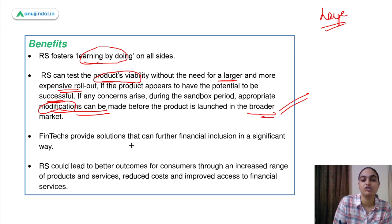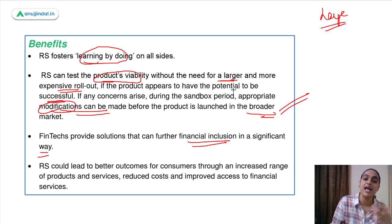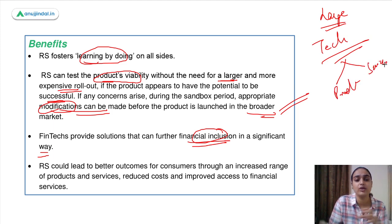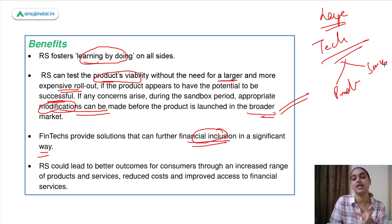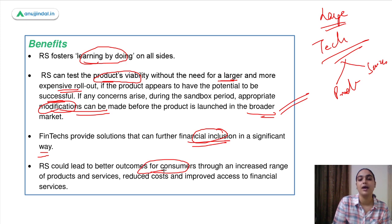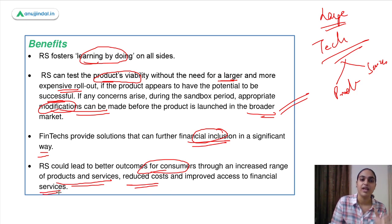Another benefit is the concept of financial inclusion — making sure financial products and services are available to the lowest possible sections of society at lower cost. Using new technology, good financial products and services can reach rural areas, backward areas, and low-income sections of society. The regulatory sandbox could also lead to better outcomes for consumers by providing an increased range of products and services at reduced cost and improving access to financial services.